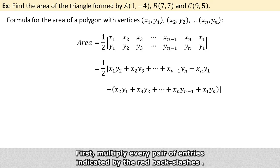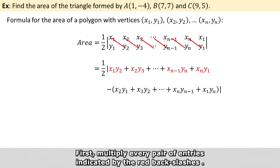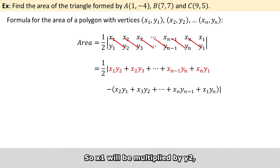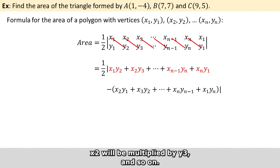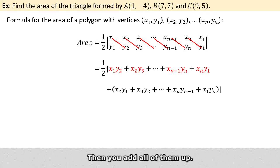First, you multiply every pair of entries indicated by the red backslashes. So x1 will be multiplied by y2, x2 will be multiplied by y3, and so on. Then you add all of them up.